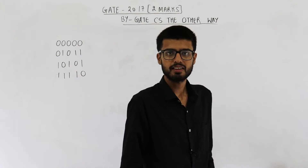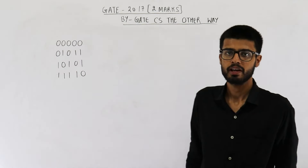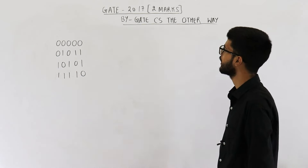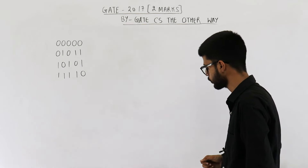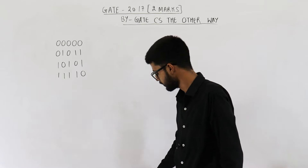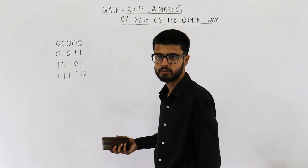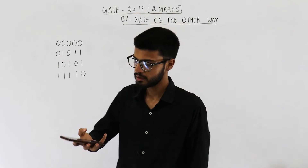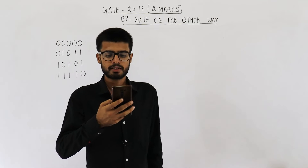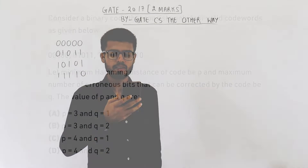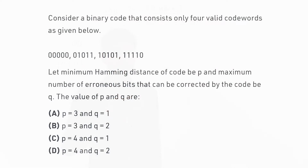Hello people, welcome back. The question is from the GATE 2017 exam. This one is for two marks. Have a look at the statement — they are saying, consider the binary code that consists of four valid code words as given below.